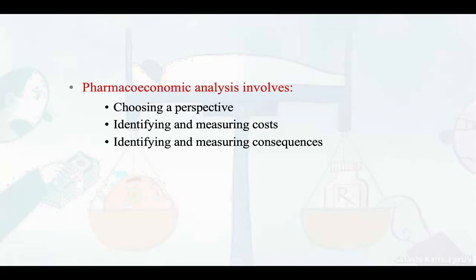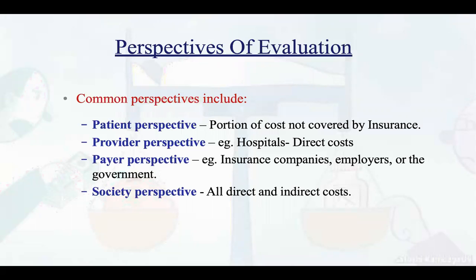Pharmacoeconomics analysis involves choosing a perspective, identifying and measuring costs, and identifying and measuring consequences. Common perspectives include the patient perspective — the portion of cost not covered by insurance. In our country, government hospitals offer free treatment, but in Europe where insurance exists, sometimes the cost is paid by insurance companies or the patient themselves.